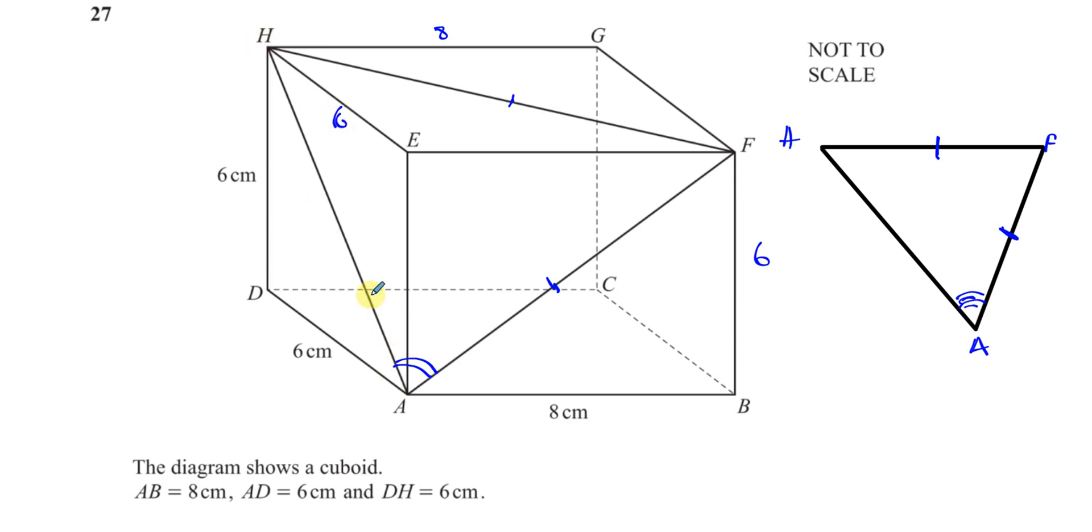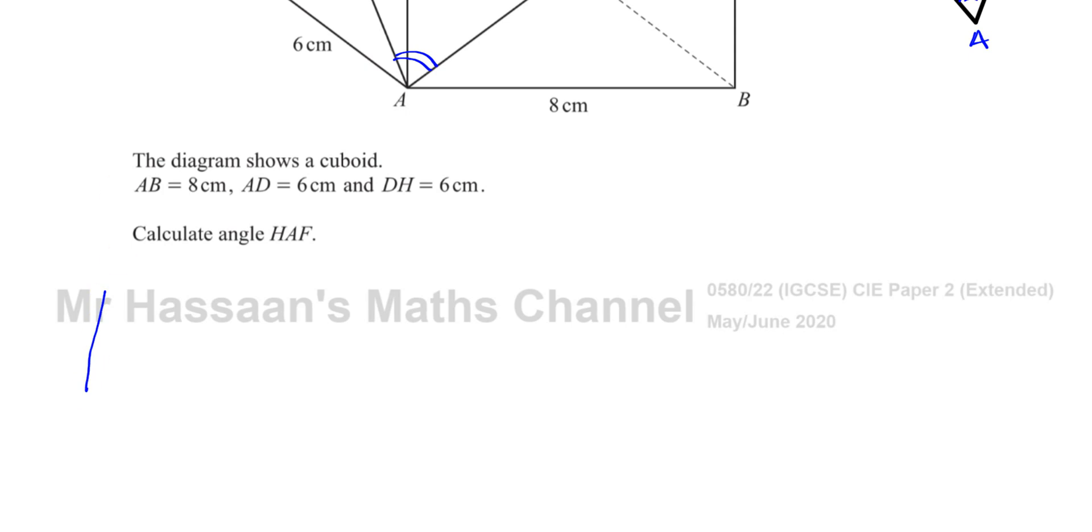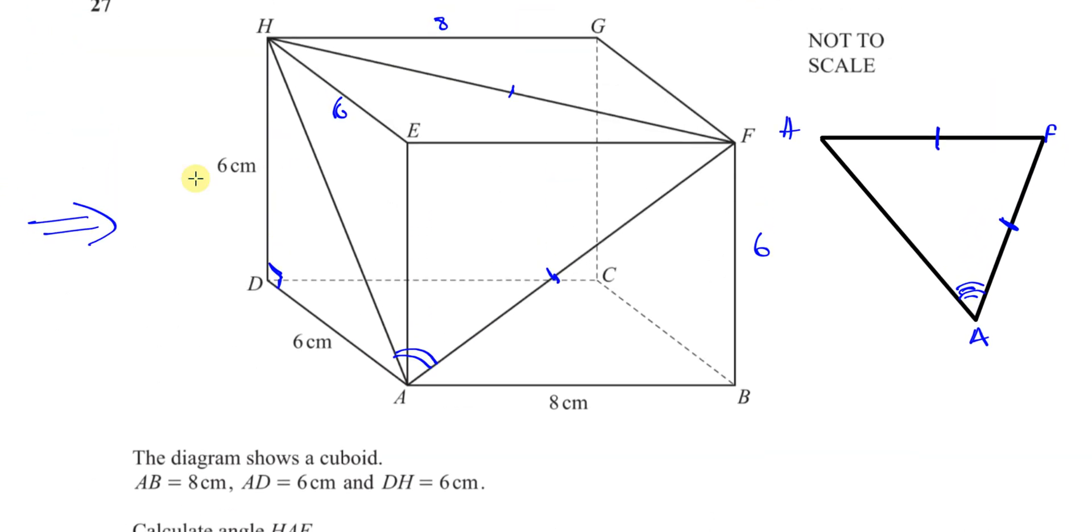I can find this angle HAF, and I could actually find it using the cosine rule. Could find it another way as well actually, but I think the cosine rule will probably be easiest. Our objective is to find now the lengths of these three sides. Let's consider, for example, AH. If I'm looking at this cuboid from this direction, I will see a right-angled triangle in front of me.